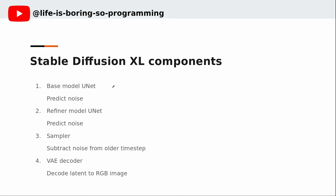We have a base model UNET, which is responsible for predicting the noise from the input latent. We also have a UNET for the REFINER, which is also responsible for predicting the noise from the input latent. There is a sampler responsible for subtracting the output of the UNET to get a latent with less noise. Via the VAE decoder, it is responsible for converting the final latent into an RGB image. There are also some conditioners, which are responsible for creating the embeddings for the UNET models.